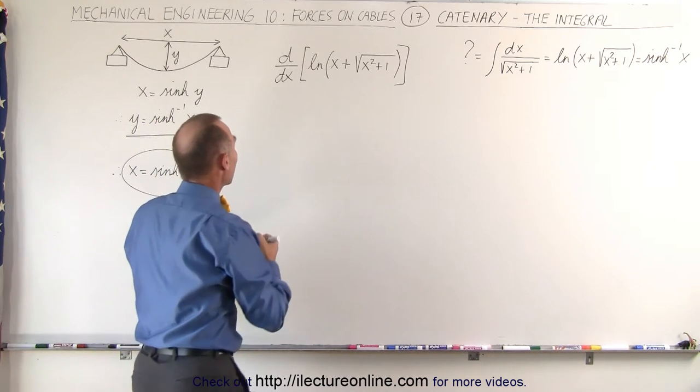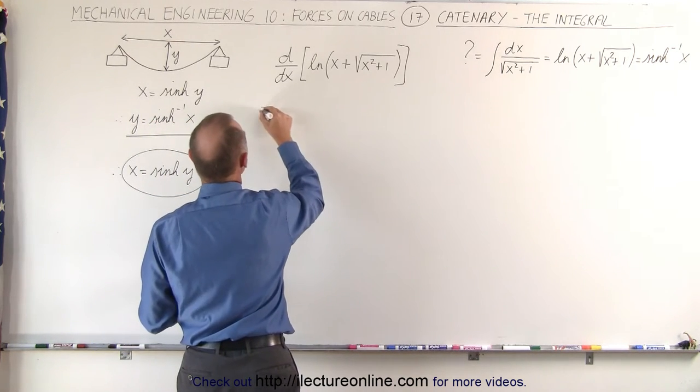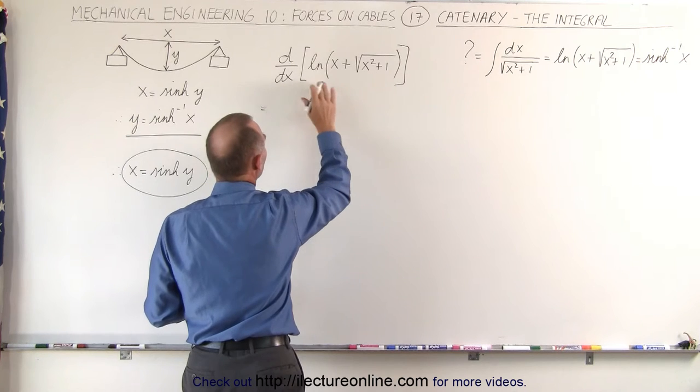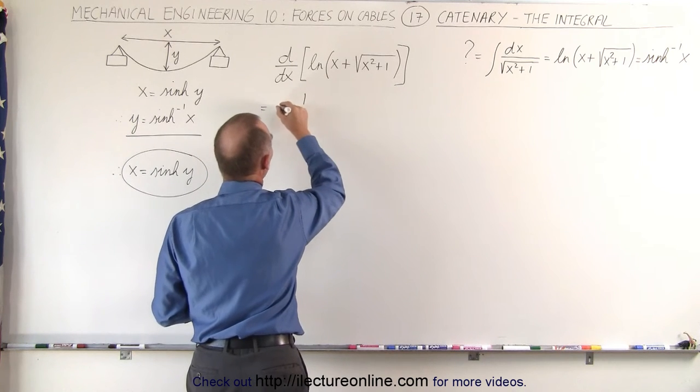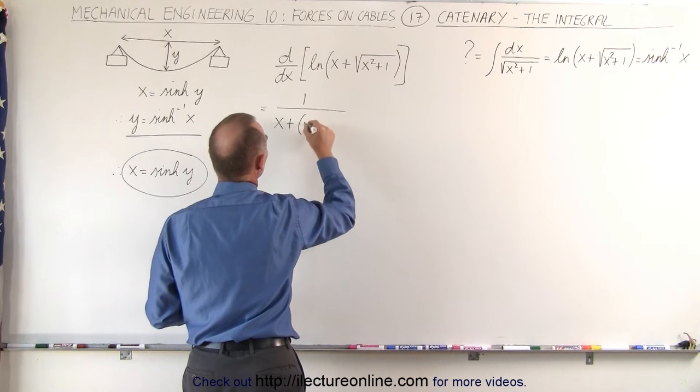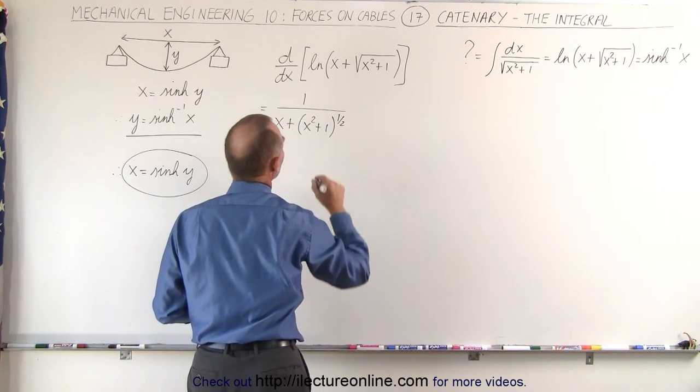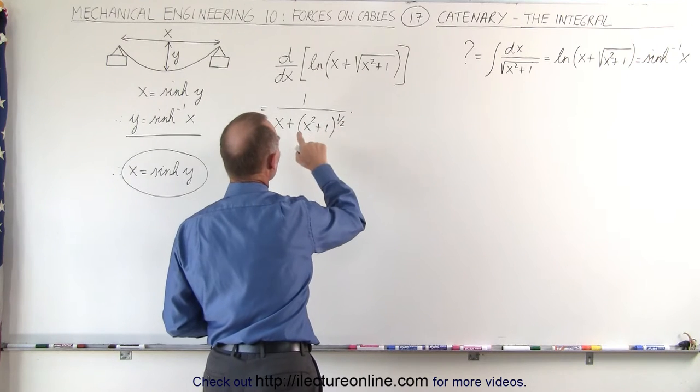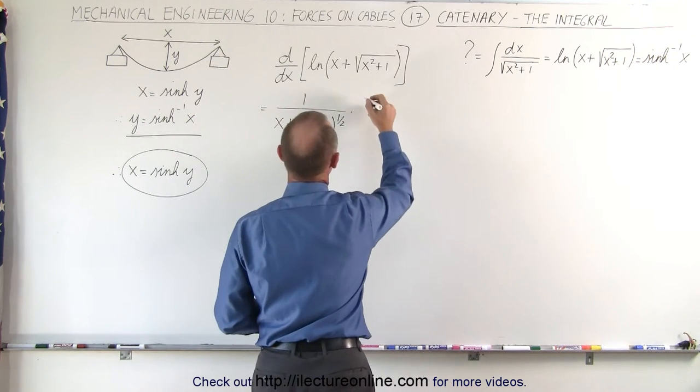So taking the derivative of that, we get the following. This is equal to the derivative of the natural log of something is 1 over that quantity x plus the quantity x squared plus 1 to the 1/2 power, times the derivative of what's here, which is equal to...